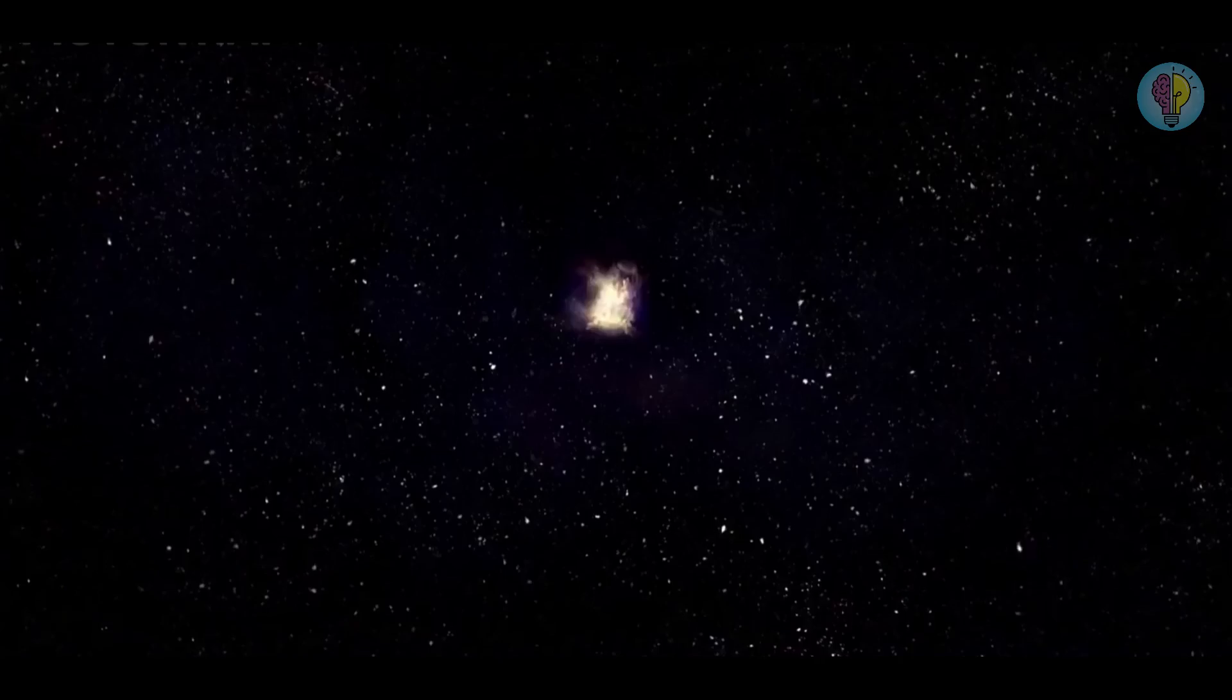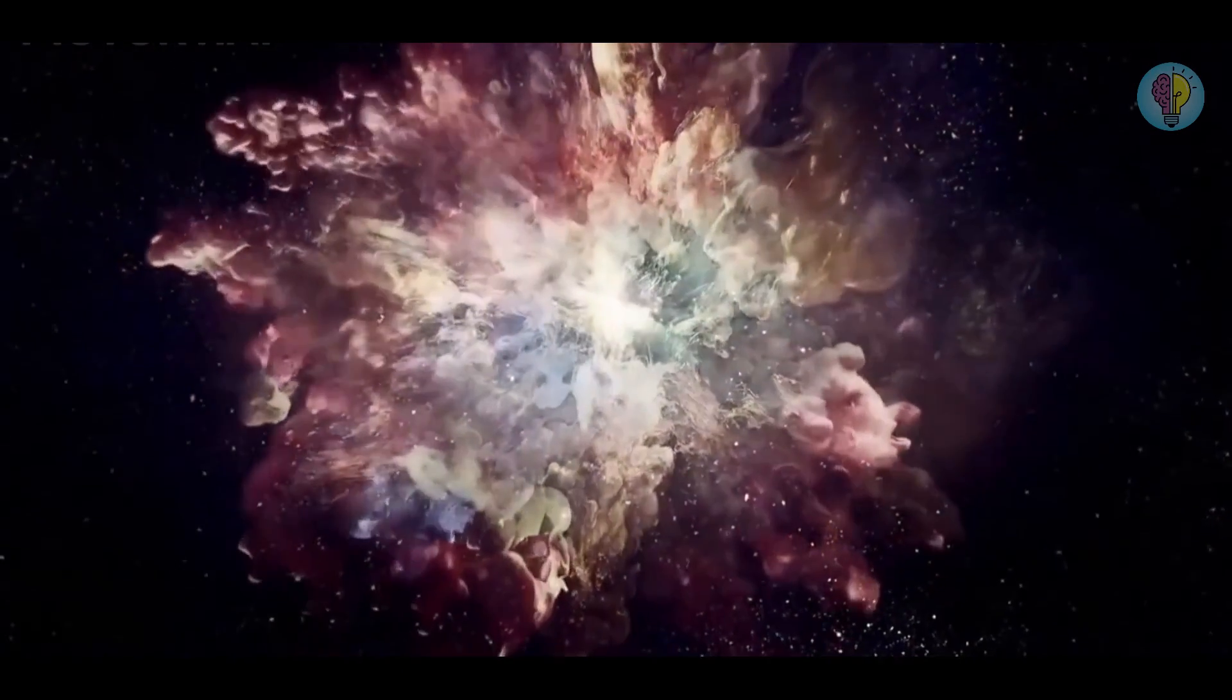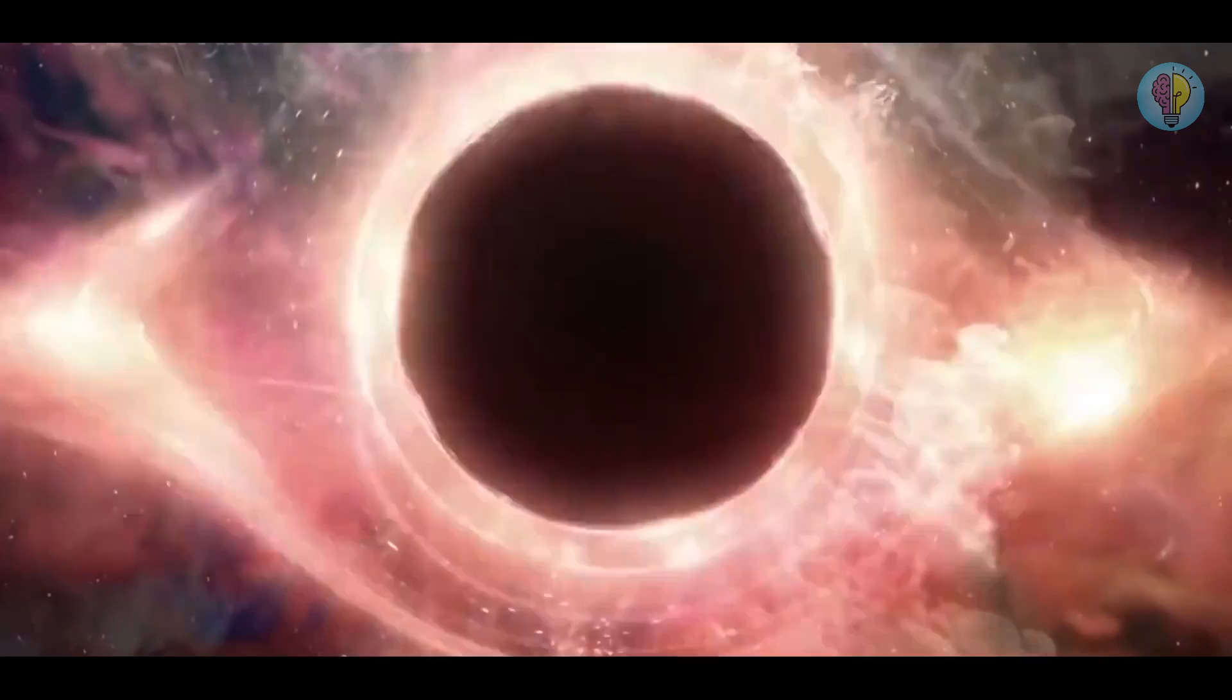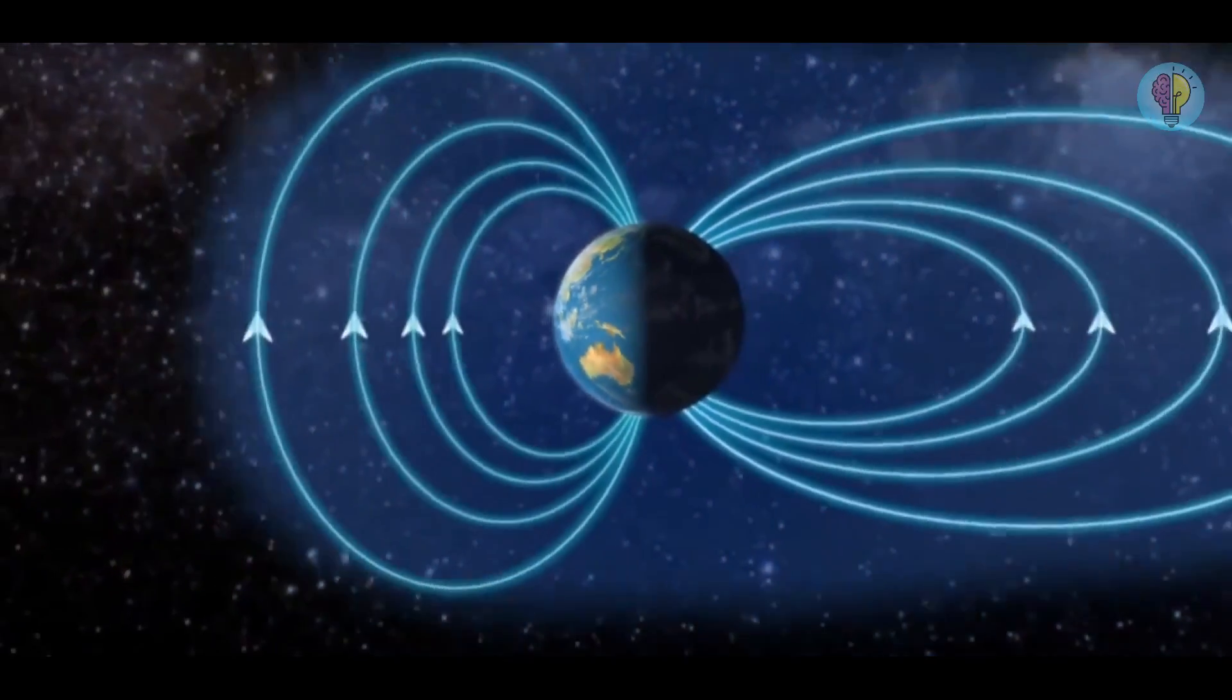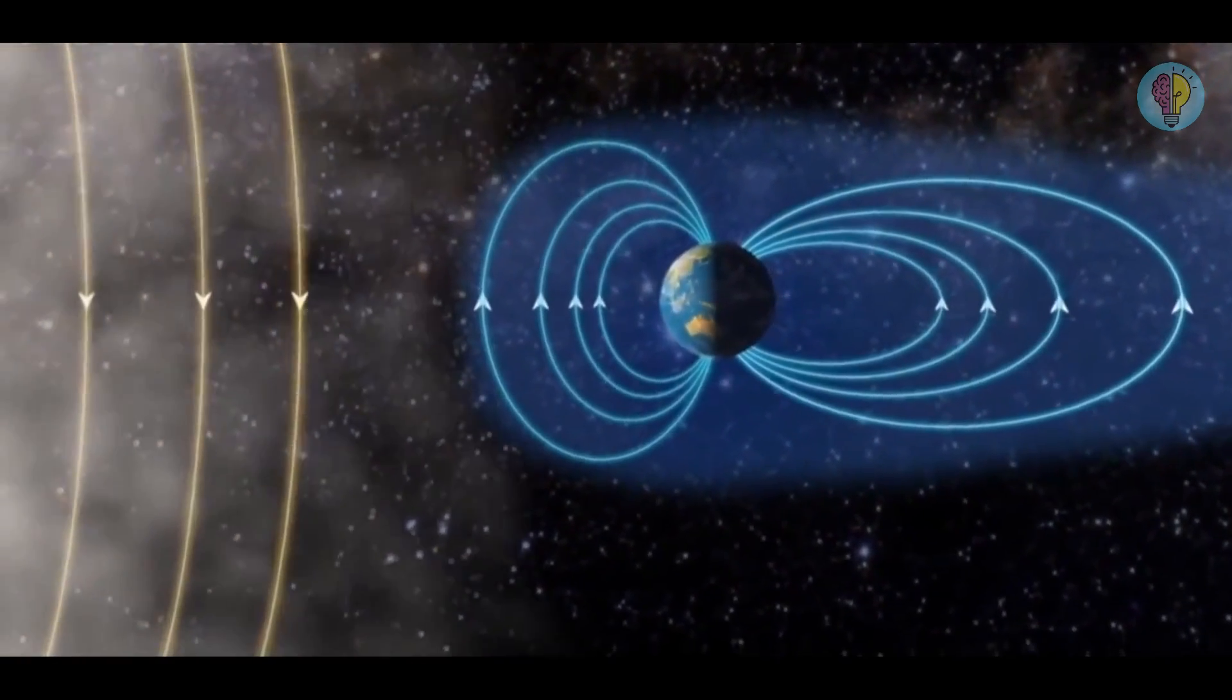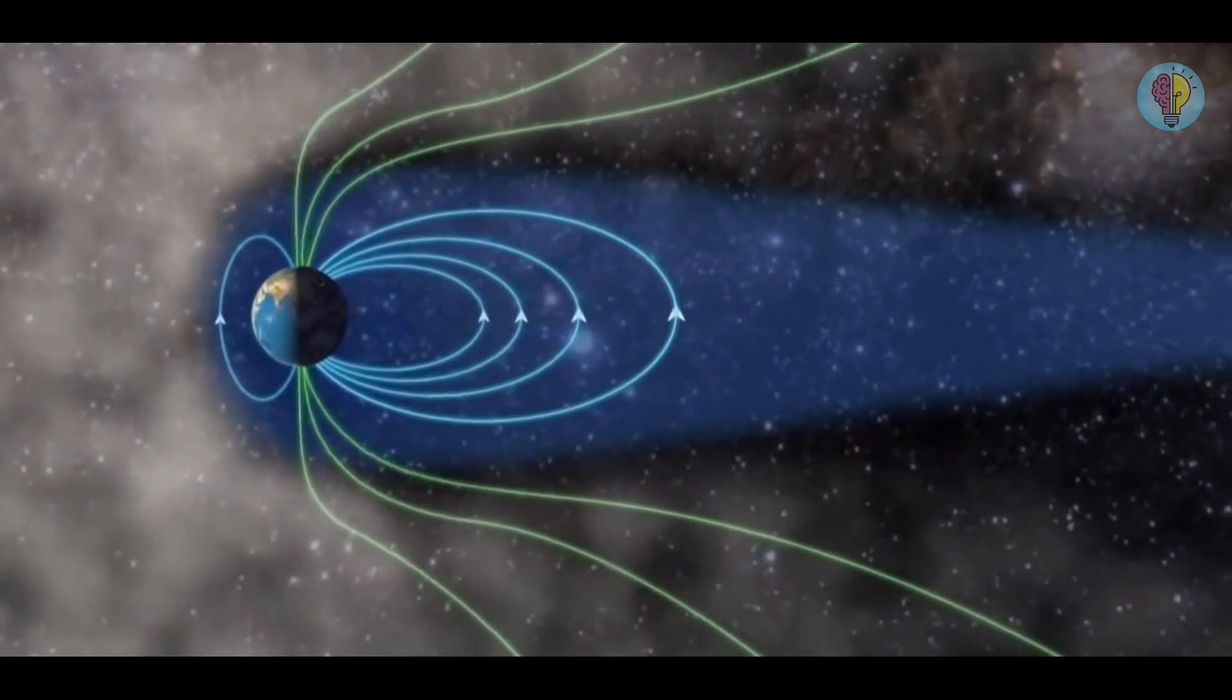Gamma ray bursts. These bursts are the result of fierce space explosions that happen when two stars collide or a giant star blows up. They can last anywhere from a fraction of a second to a couple of minutes. If the earth is within the vicinity of a gamma ray burst, it could obliterate our ozone layer, which, as we've already mentioned, will lead to the end of everything on the planet.